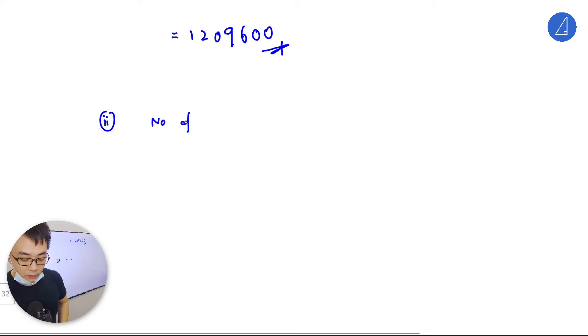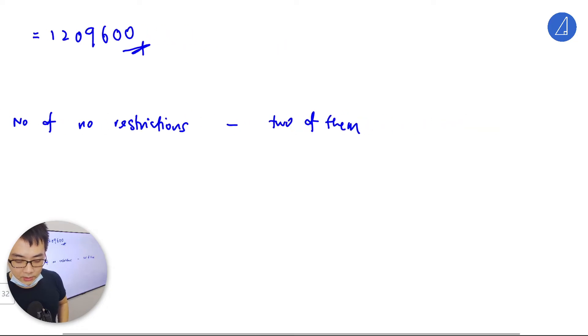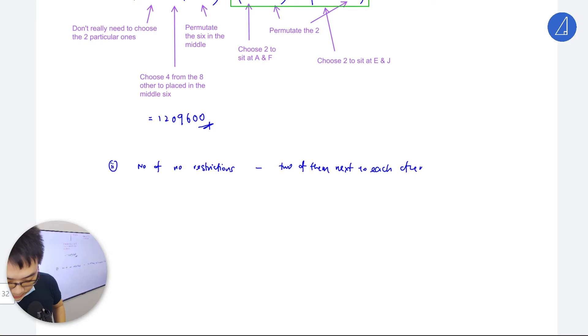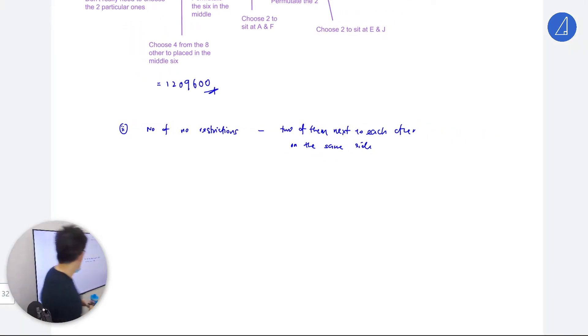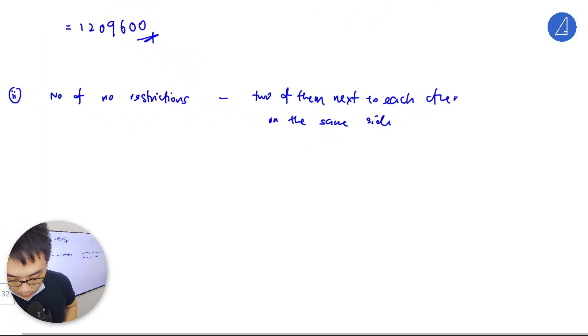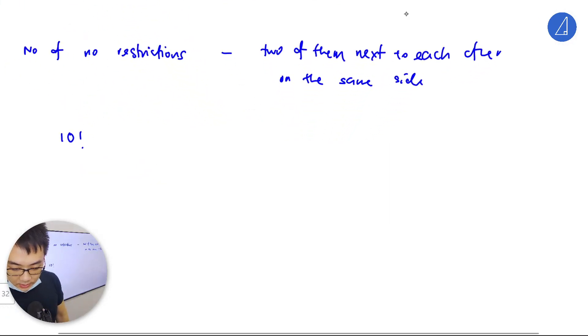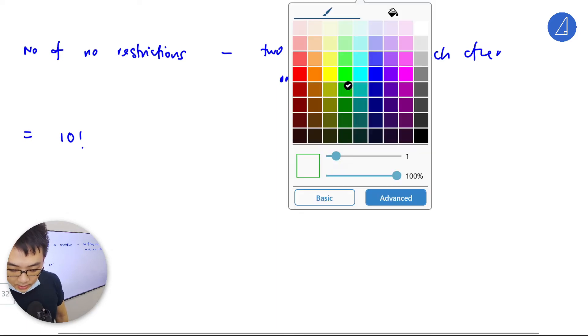Number of no restrictions - total number of no restrictions minus two of them next to each other on the same side. No restrictions we already know is essentially 10 factorial. Next to each other - this one is a bit tricky, so follow me.